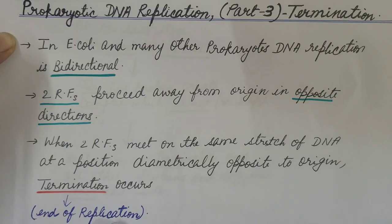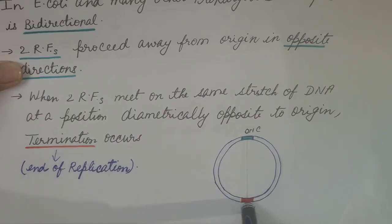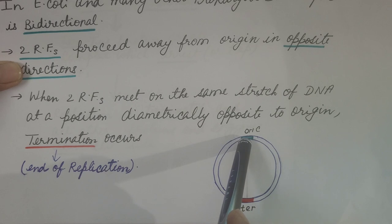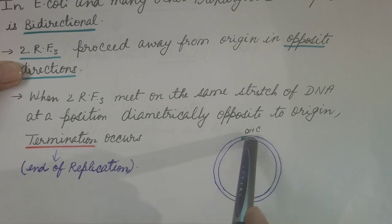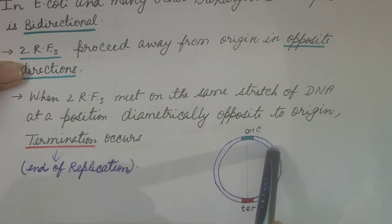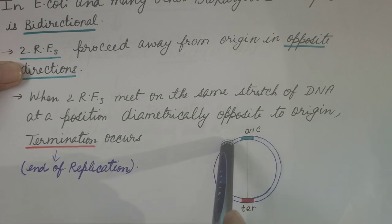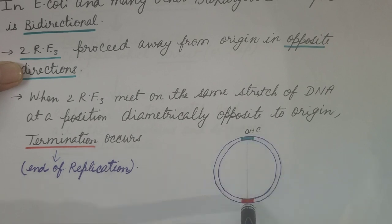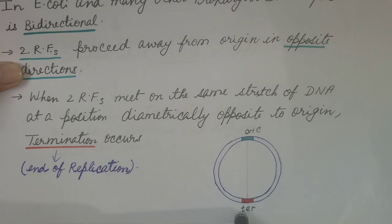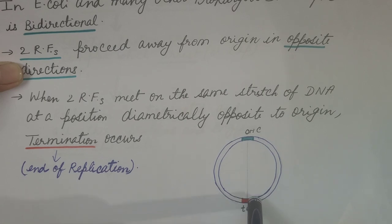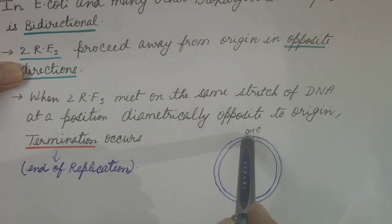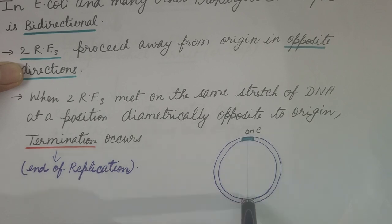This is the circular chromosome of E. coli. This is the origin of replication from where the replication starts, and the two replication forks move in opposite directions and meet at this region known as the terminus region. Here the termination of replication occurs. This region is diametrically opposite to the origin.